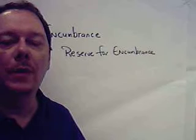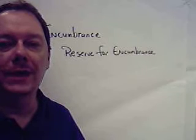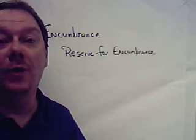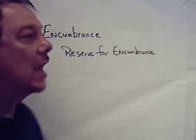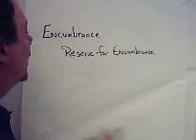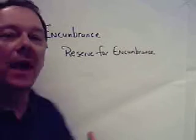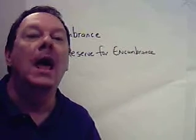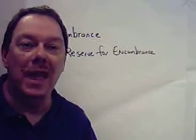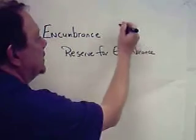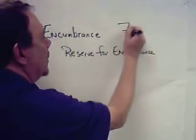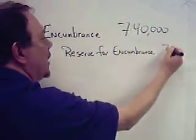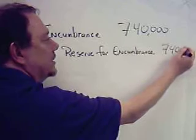The problem started with the concept of ordering $740,000 worth of supplies. When you see the word 'ordering,' think in government that a purchase order or PO is issued — in this case for $740,000. We're going to debit the encumbrance account and credit the reserve for encumbrance.